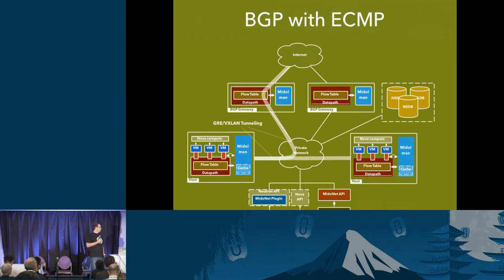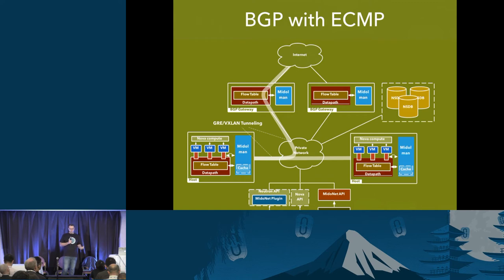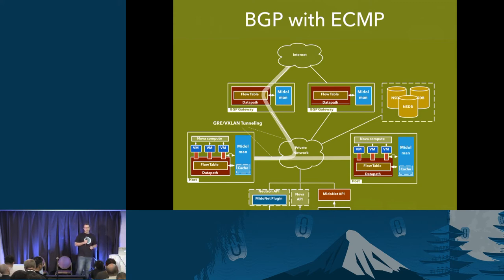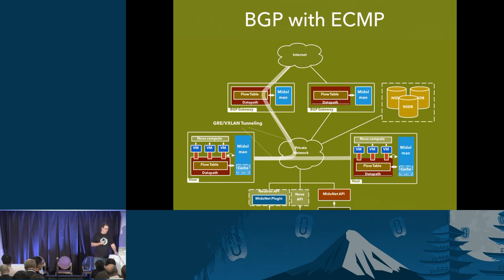We have a concept of active-active gateways — sometimes called L3 or BGP gateways. The same software that runs on compute hosts runs on gateway nodes. Those gateway nodes connect to an upstream physical router or switch using EBGP, advertising the floating IP pool. All gateway nodes are multi-homing and advertising the same pool, so the physical network can use equal-cost multi-path to balance inbound traffic across all gateways. The same applies going outbound.